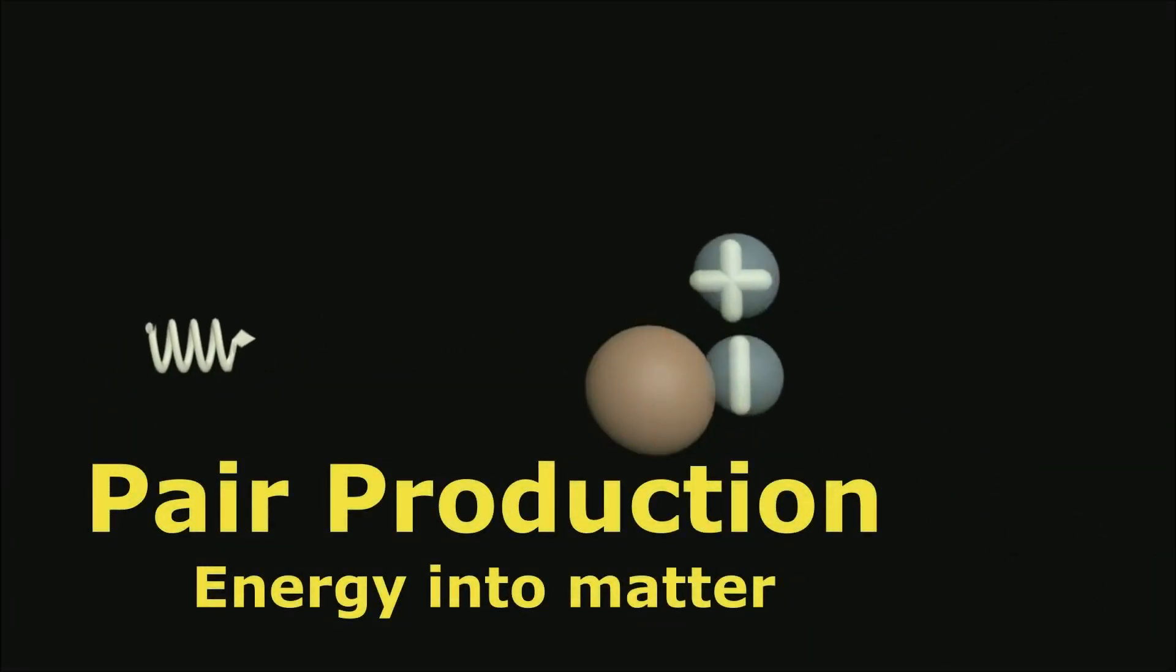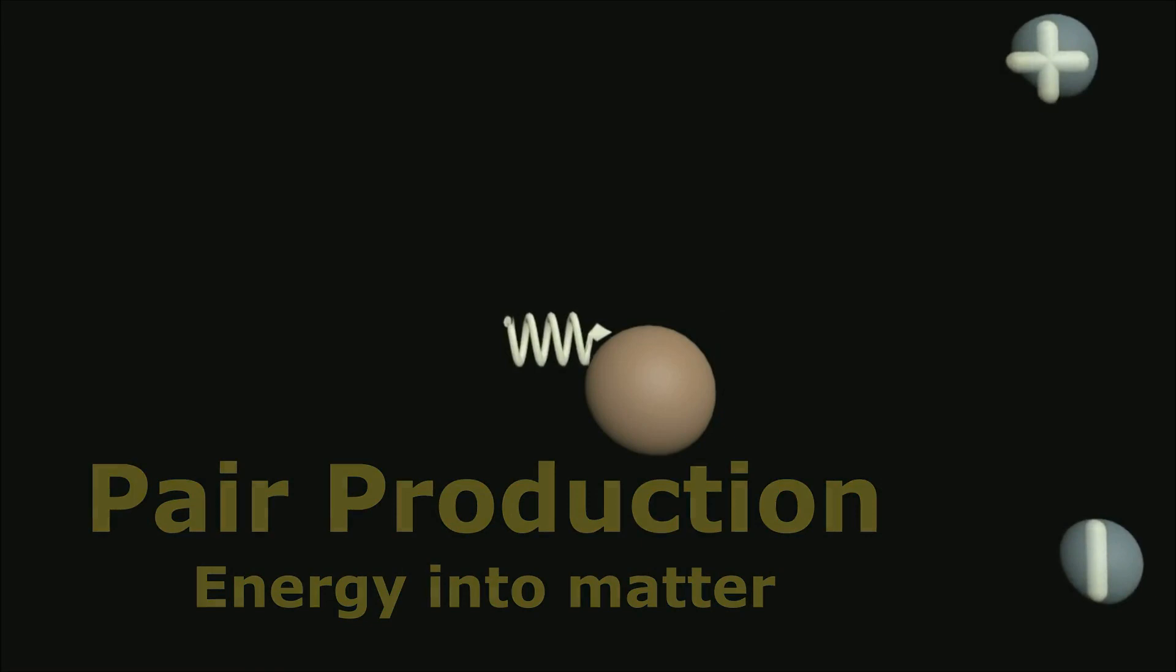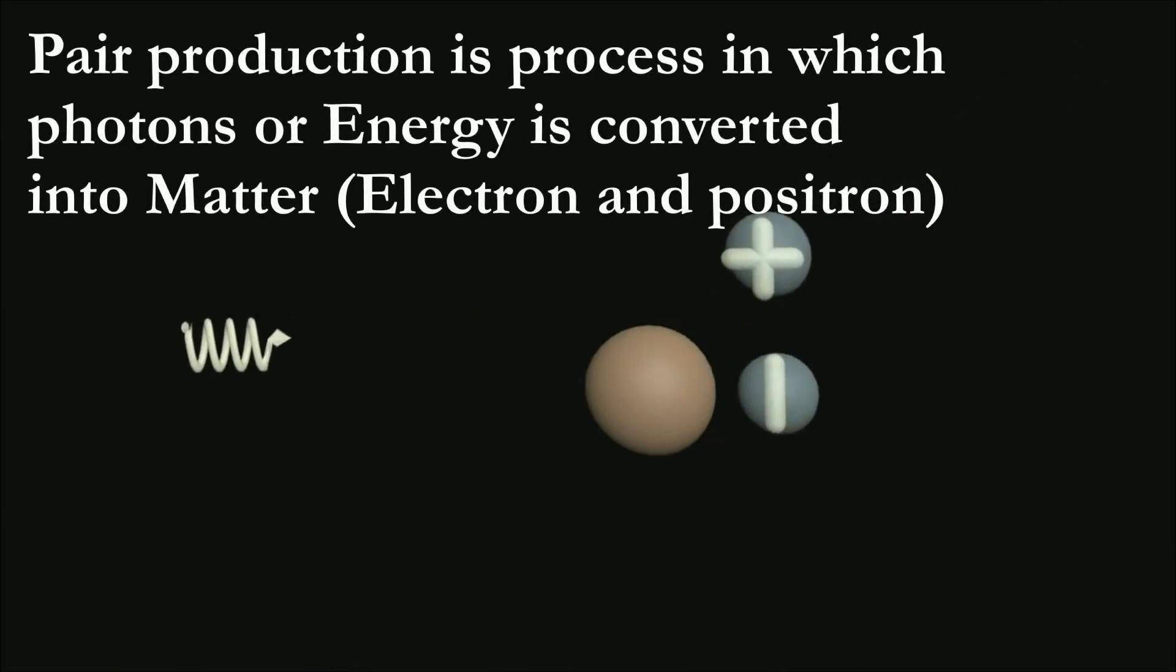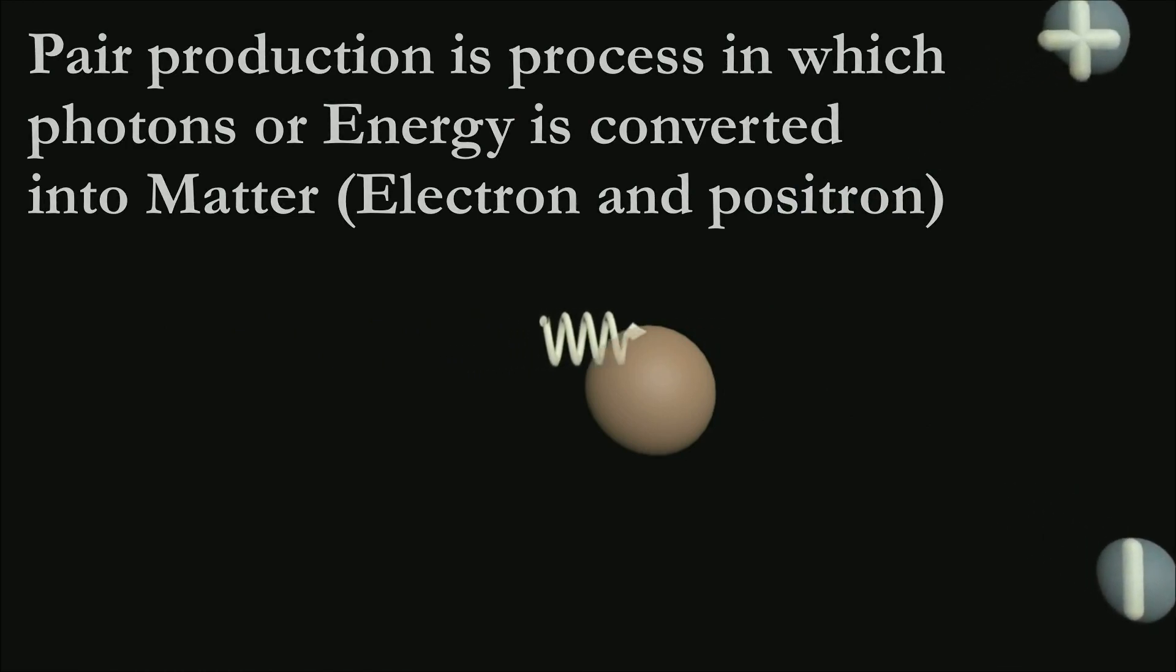Pair production. Pair production is a process in which photons or energy is converted into matter.